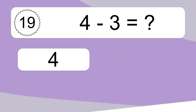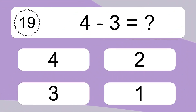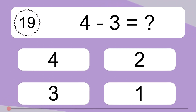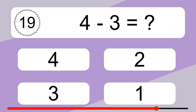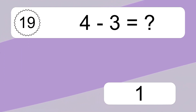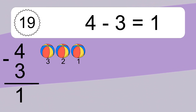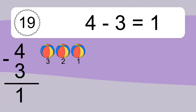4 minus 3 equals what? 4 minus 3 equals 1. Let's count it: 3, 2, 1.